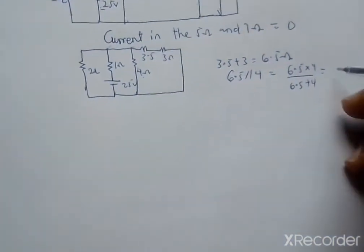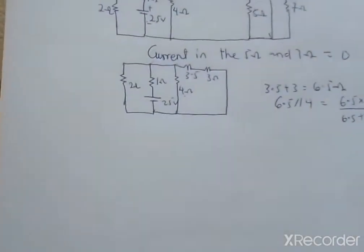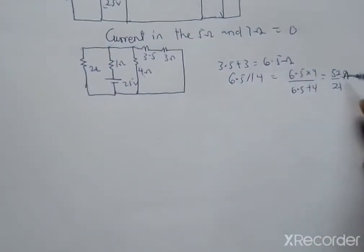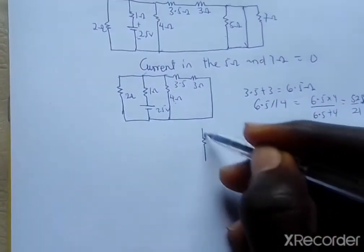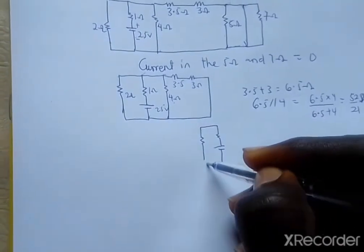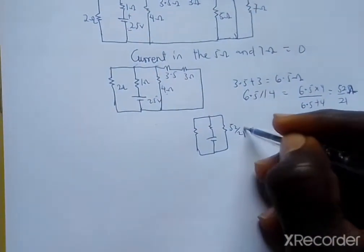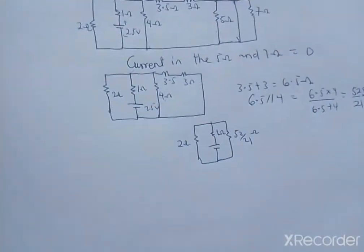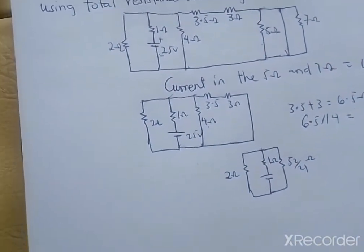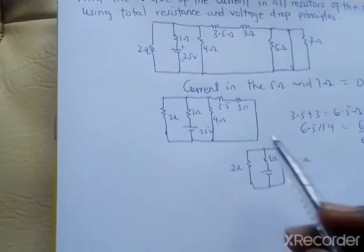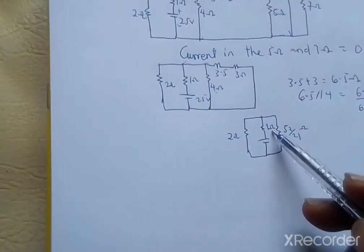So we get 52/21 ohms — note that is resistance, not current. When we redraw the circuit we now have a 2 ohm resistor, a 1 ohm resistor, and the 52/21 ohm equivalent. From here we can see that the 52/21 ohm is in parallel with the 2 ohms, because there is a node between them and you can traverse either without meeting another element.